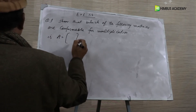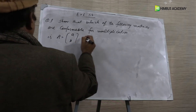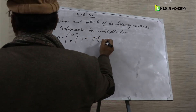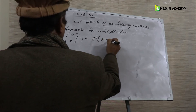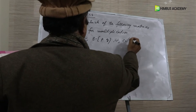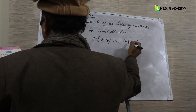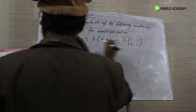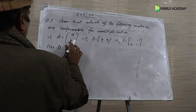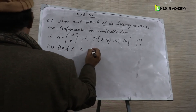Number 1: A is equal to AB. Number 2: B is equal to PQO. Number 3: C is equal to 1, -1, -2, 1. And number 4: D is equal to PRS.